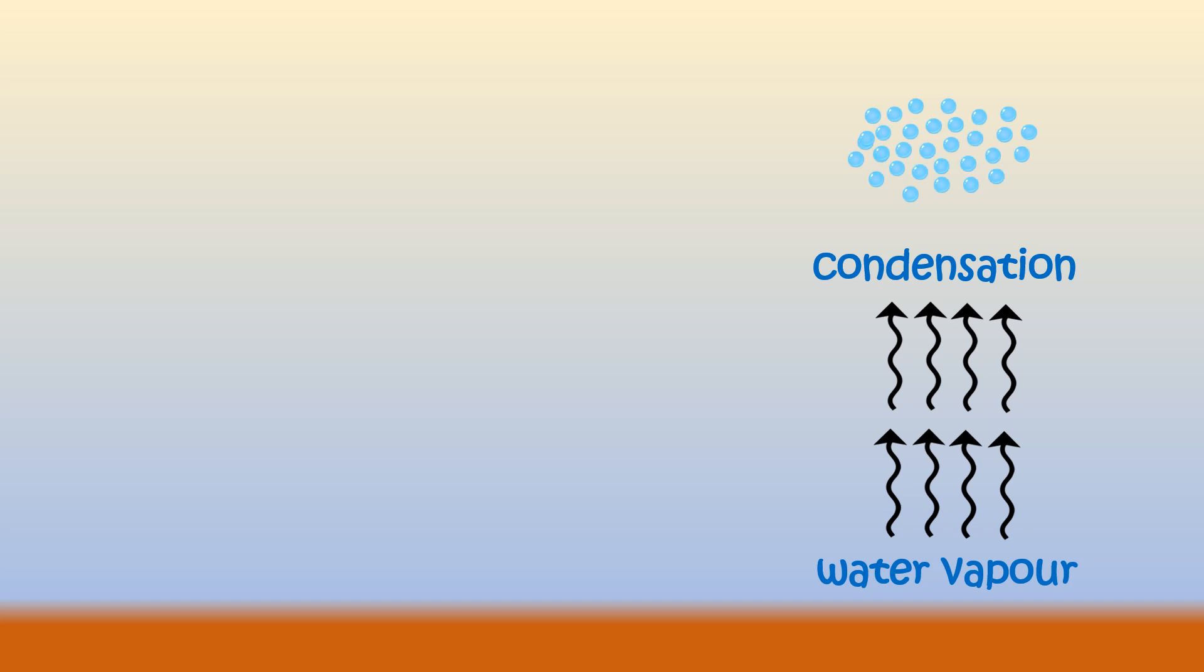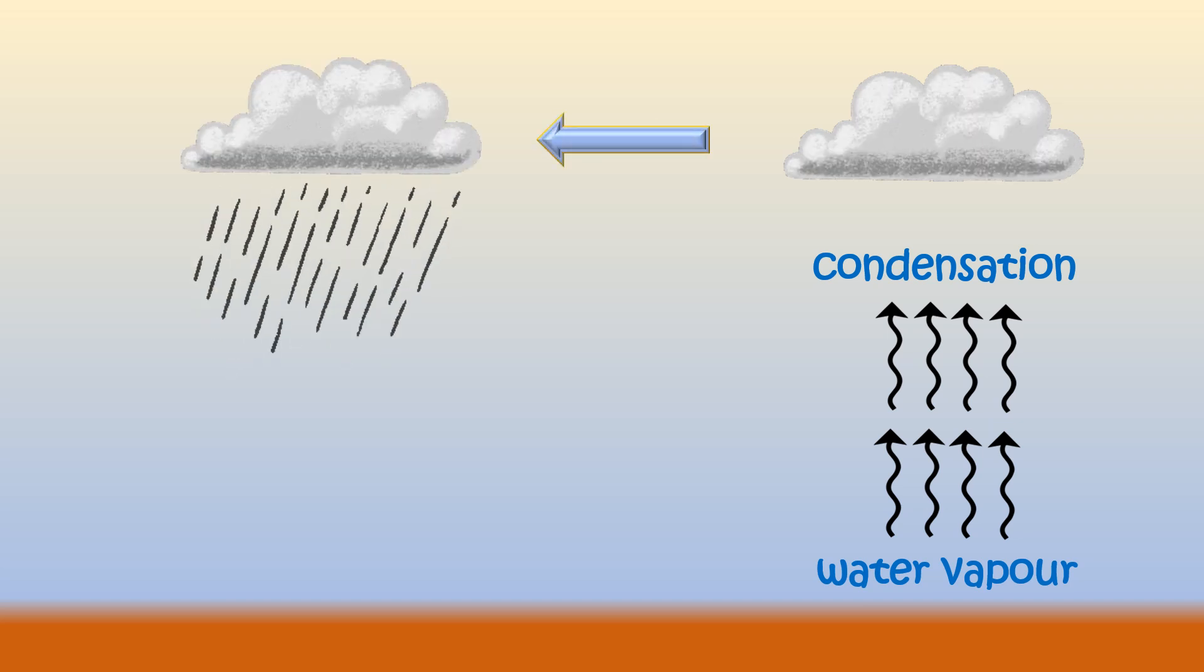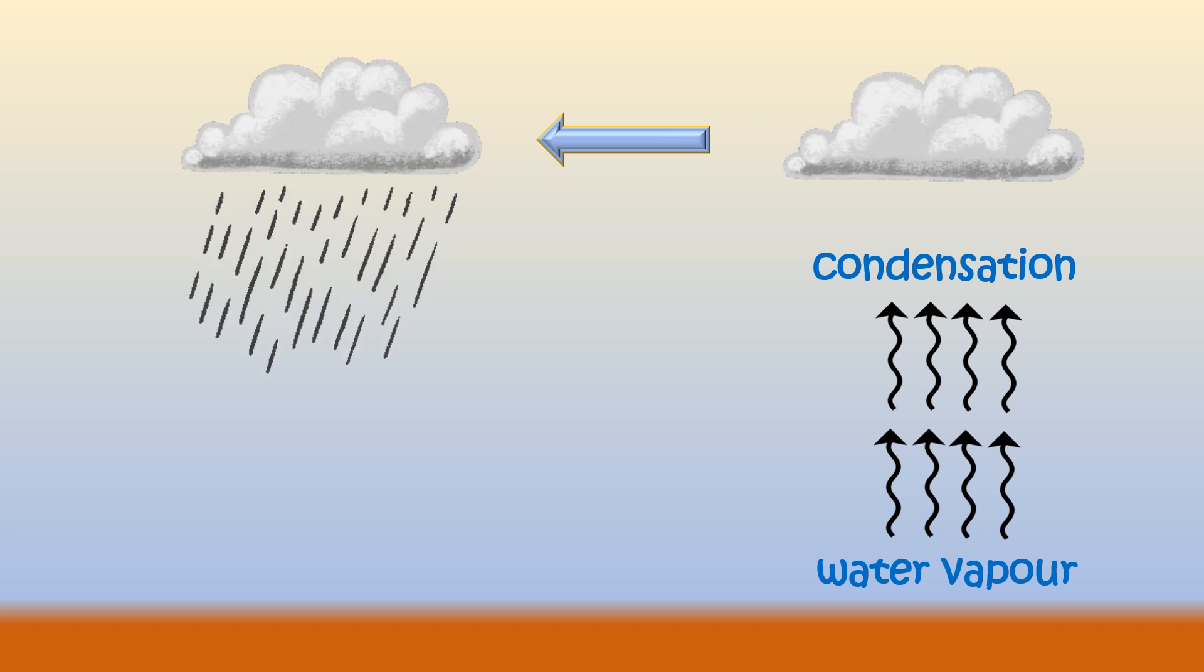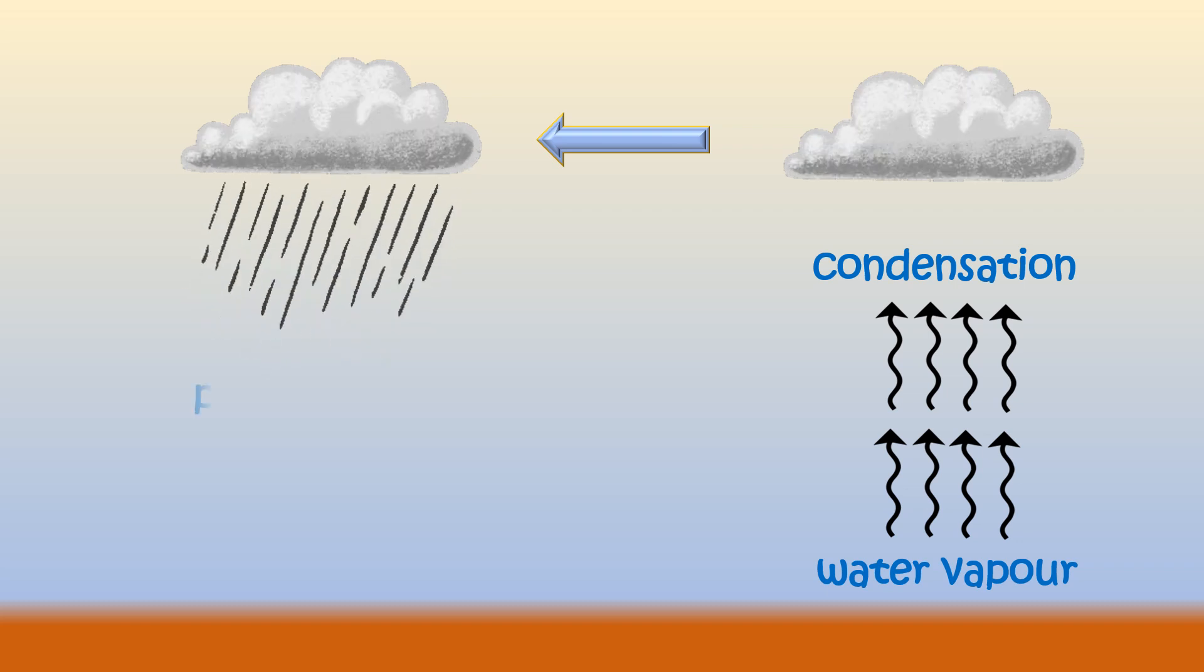These water droplets form the clouds that we see in the sky. When the clouds become so heavy that they cannot hold water anymore, they fall back on the earth's surface in the form of rain. This process is called precipitation.